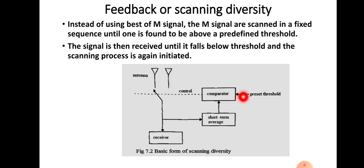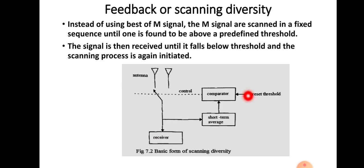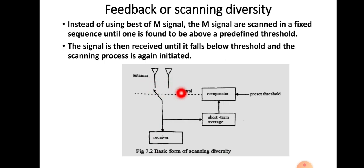The signal is then received until it falls below the threshold, at which point the scanning process is initiated again. For example, if the signal from the first antenna is above the threshold it is demodulated; if at the next instant it falls below threshold, scanning restarts. The decision is based on the threshold level, which is derived from a short-time average value.